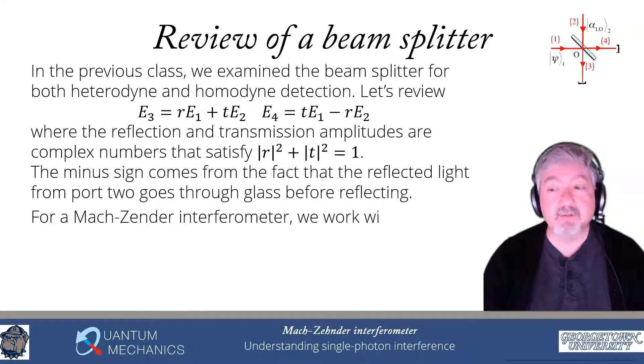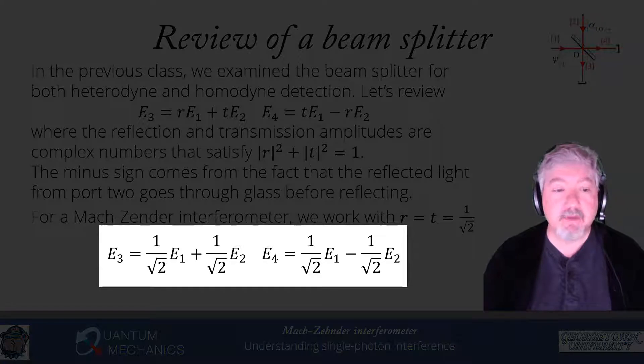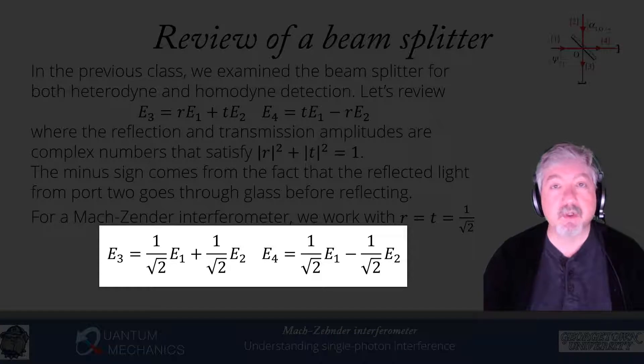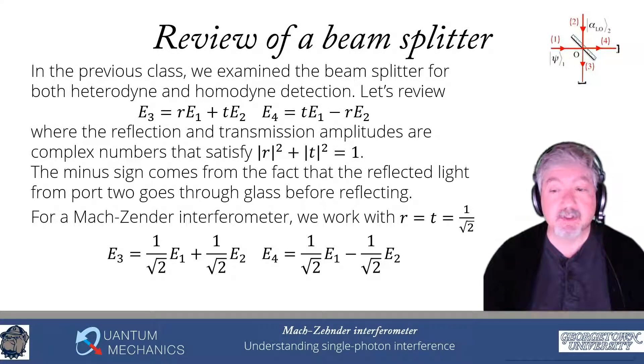In particular, for a Mach-Zehnder interferometer or for balanced homodyne detection, we will be working with R and T both equal to 1 over the square root of 2. Then we can rewrite our expressions in this much simpler form: E3 is 1 over square root of 2 E1 plus 1 over square root of 2 E2. And E4 is 1 over square root of 2 E1 minus 1 over square root of 2 E2. Of course, I did not put the hats in these, but these electric fields are represented in terms of operators, in terms of the raising and lowering operators, A and A dagger.